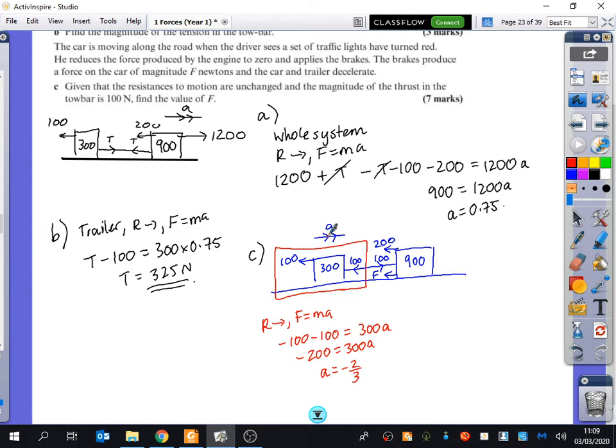I can look at either the whole system or the car. Which one do you think I would prefer to do? I think I probably would prefer to do the car just because it's got a few less forces going in. So I'm now going to have a look at this part of the diagram. We're going to resolve going to the right using F equals MA. This time we're doing it for the car instead. What forces are pushing the car forward? The thrust. So we're going to have 100.